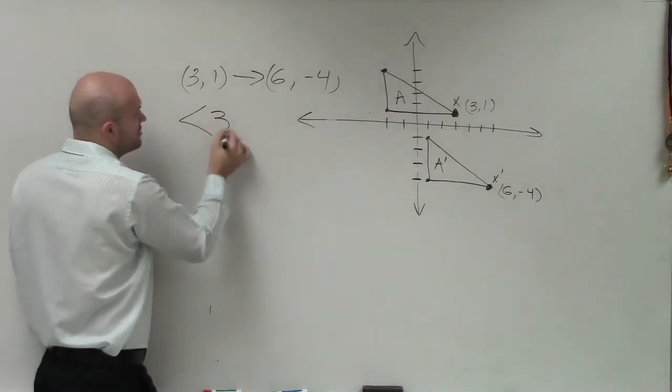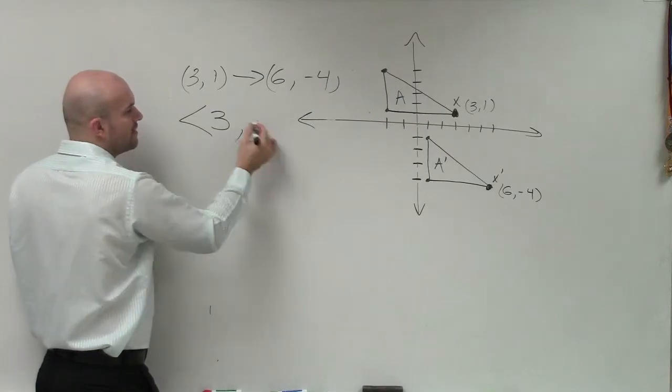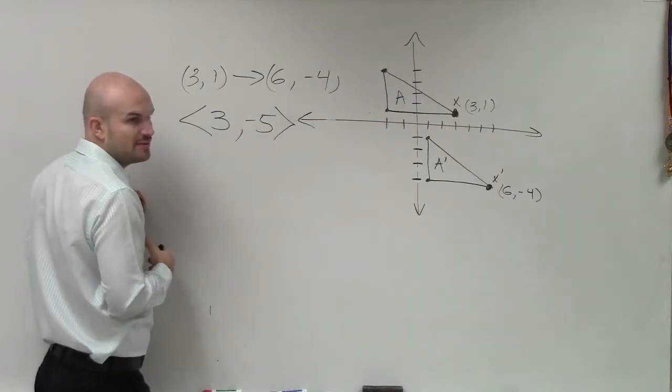Add. Add 3. So it's a positive 3, right? And then to go from 1 to negative 4, we had to subtract 5. And there's your transformation vector.